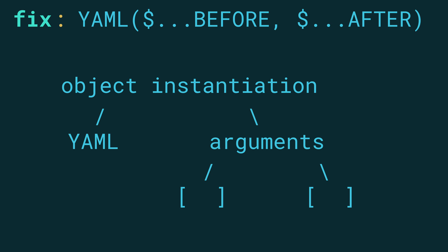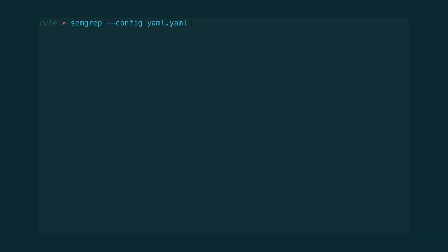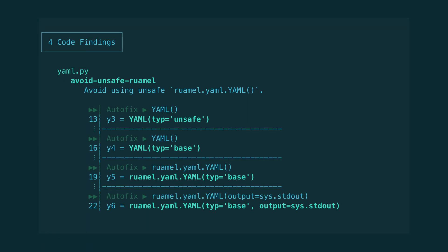In the case that both of these are empty lists, then no arguments will be printed and we don't need to add any commas. This should result in a correct fix in all of our test cases. Let's have a look. You can see that we are always having the correct number of commas in our test cases.